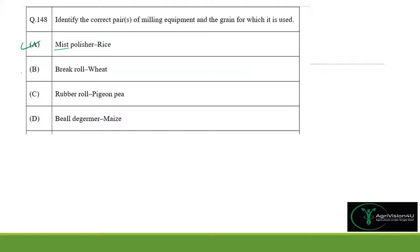Option B: break roll system in wheat. In wheat milling, we have two roll systems — the break milling system and the reduction milling system. The break milling system produces uniform middlings and also removes the bran in the form of flakes. Hence the break rolls are used in the case of wheat, so option B is also correct.